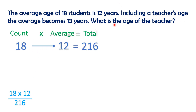Including a teacher's age, the average becomes 13 years. One teacher's age is added. Already 18 students — so the count becomes 19 members.